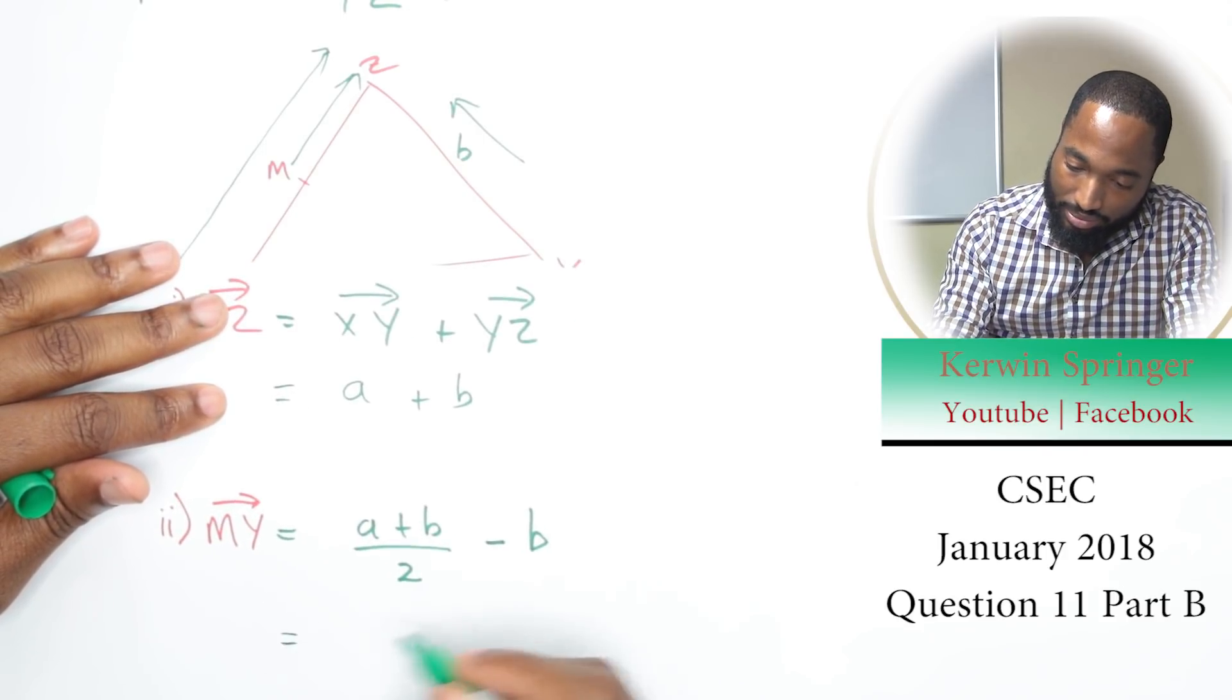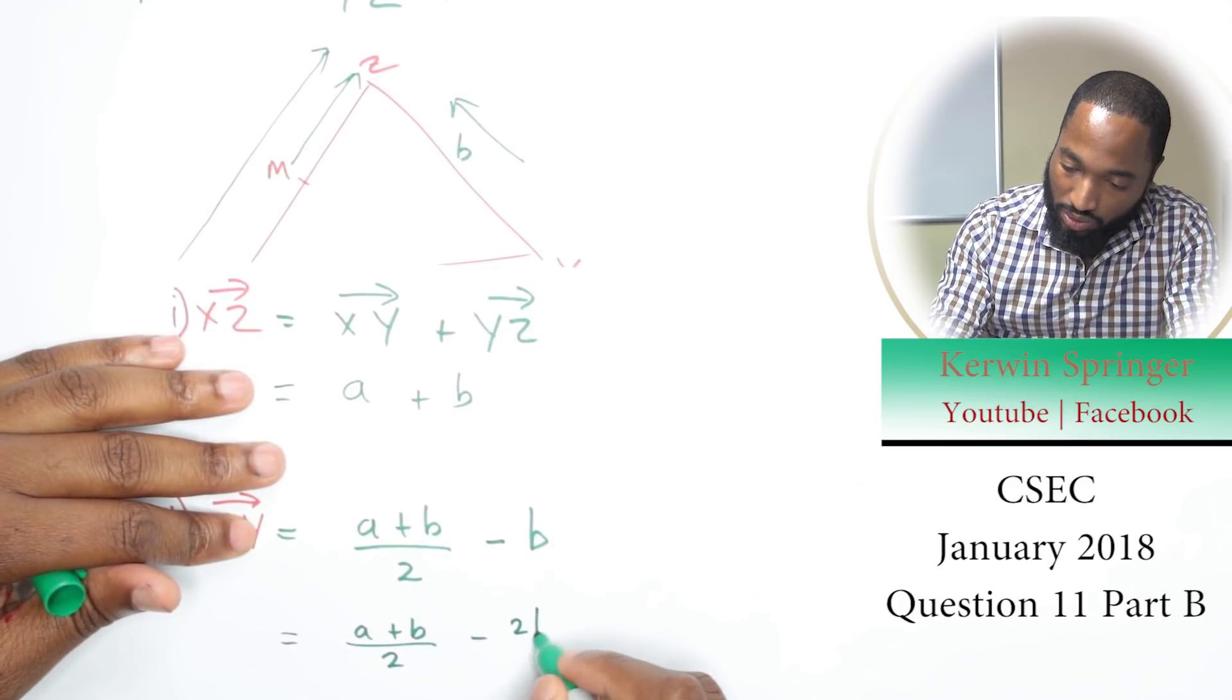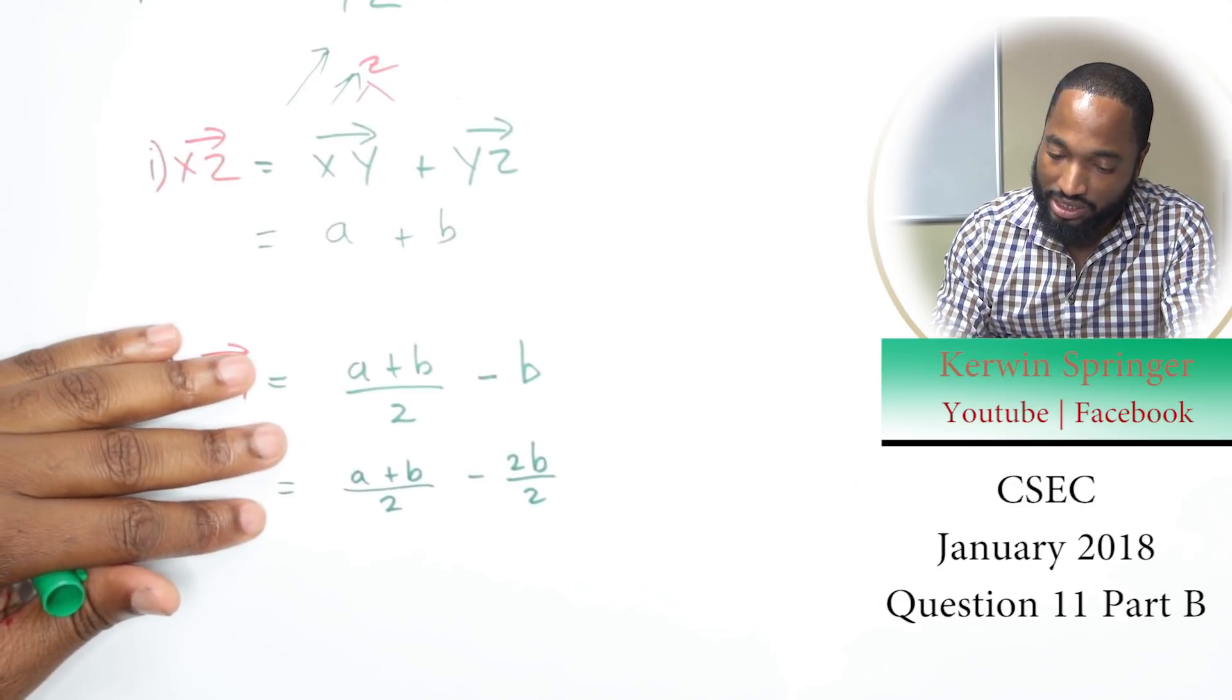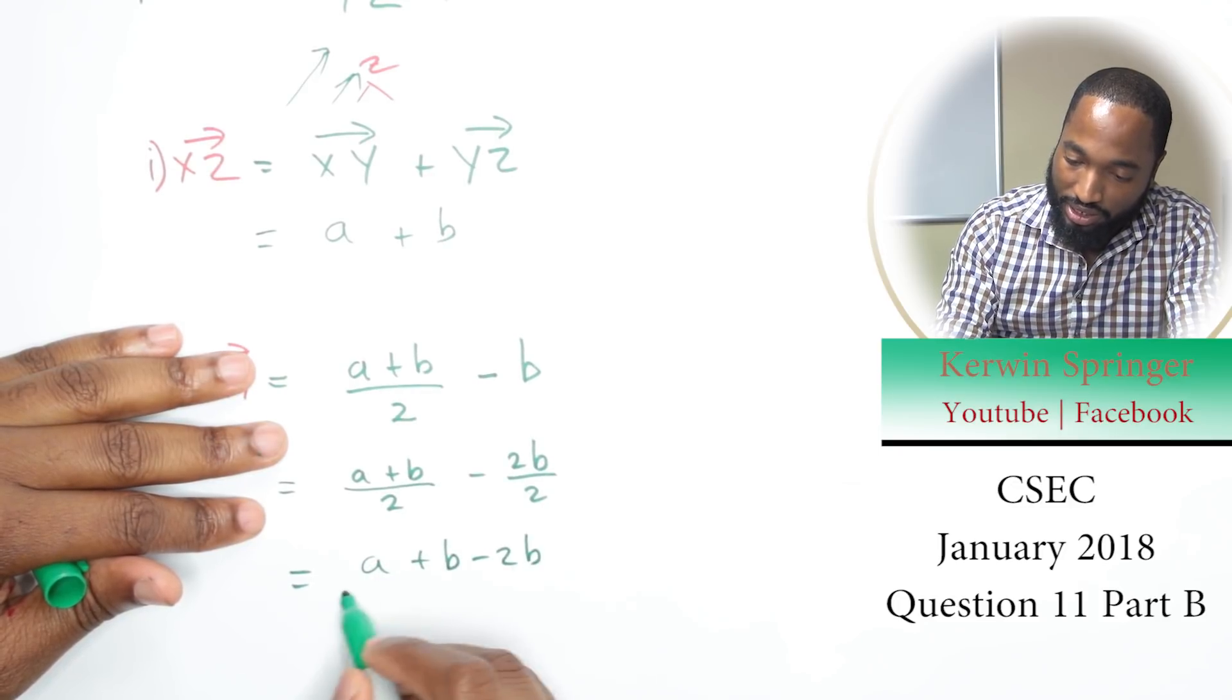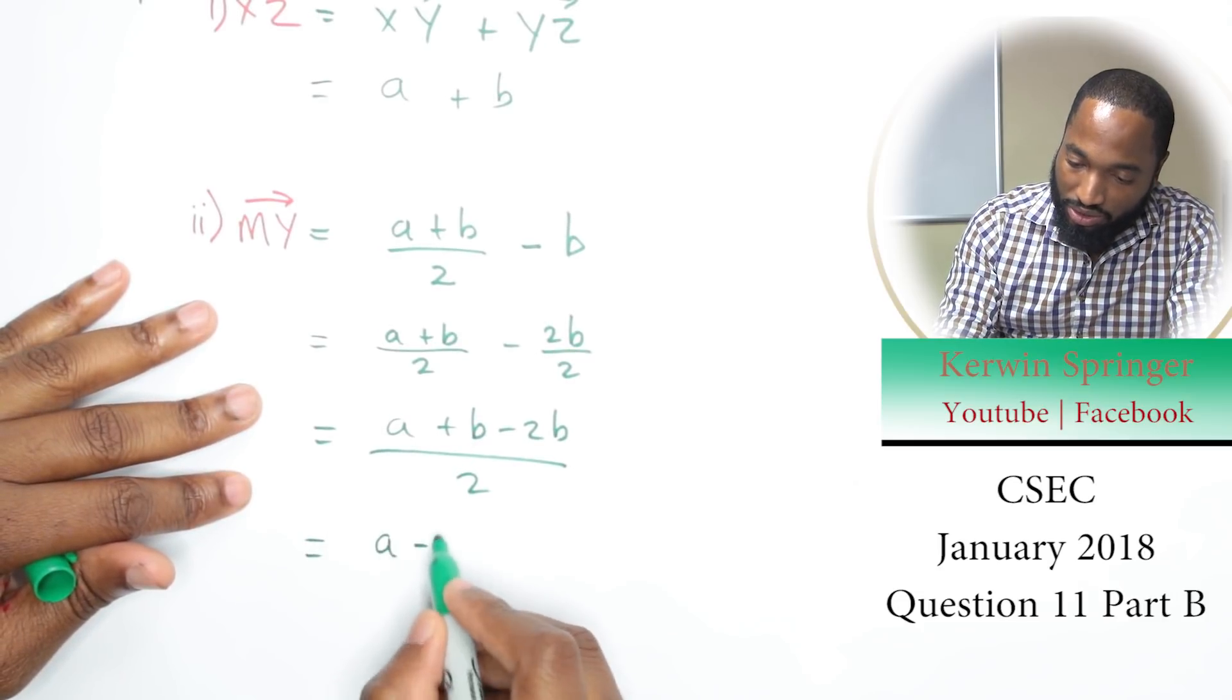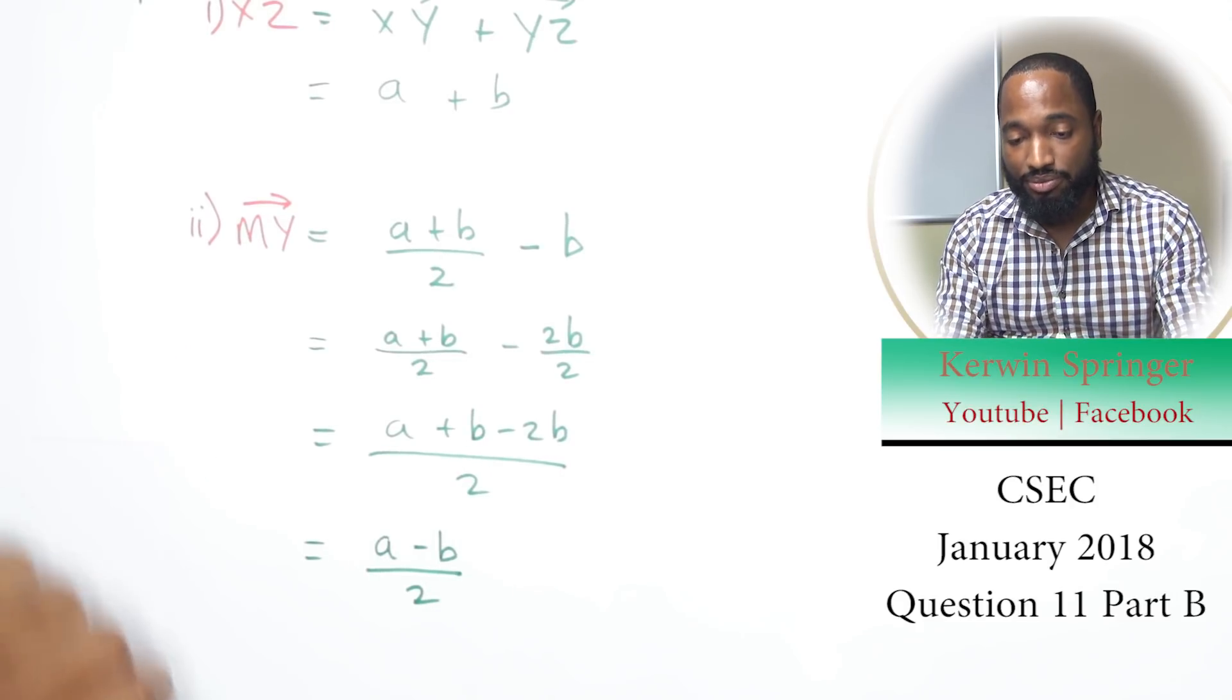Let's put that b over 2 as well. Now we can put everything over 2. I'm hoping you can see I will get (a + b)/2 - b, which simplifies to (a - b)/2.